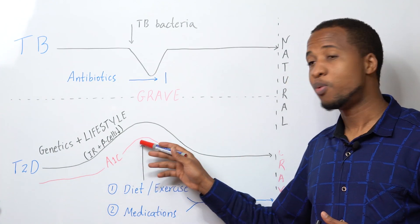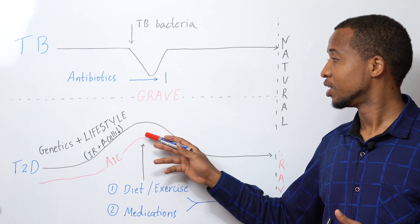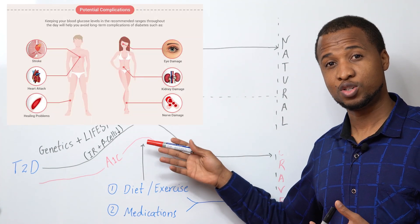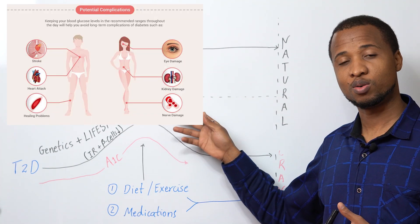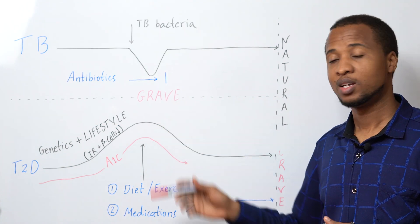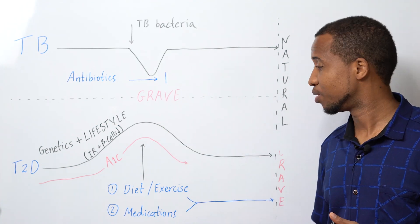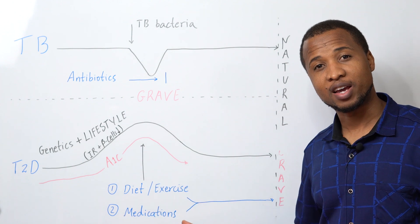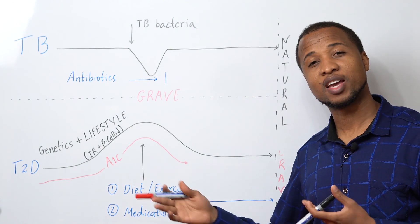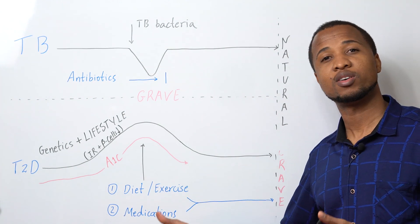Now when it goes to a certain point, it can cause a lot of issues that will send you faster to this line. Now we have a lot of ways to deal with that. You can change your diet. You can start doing exercise. You can take medications. You can take later insulin.